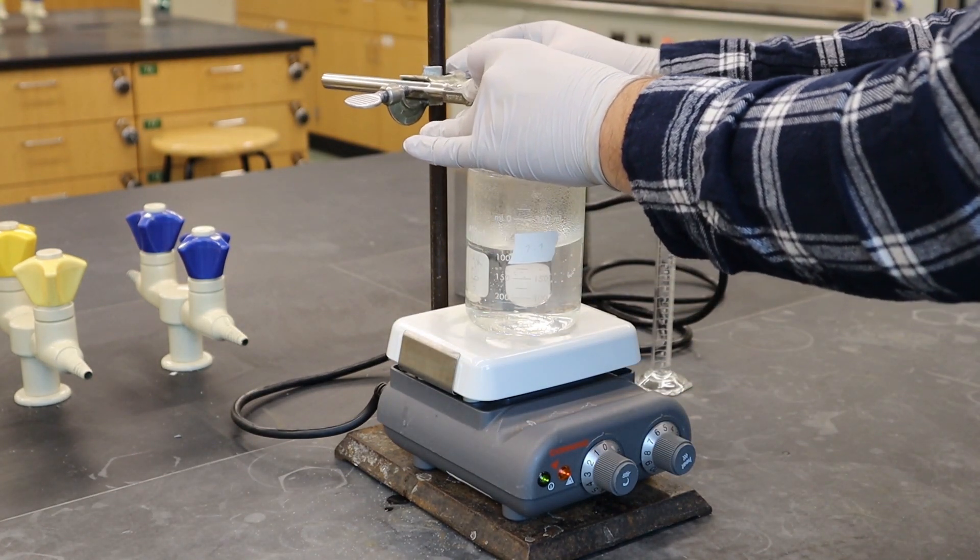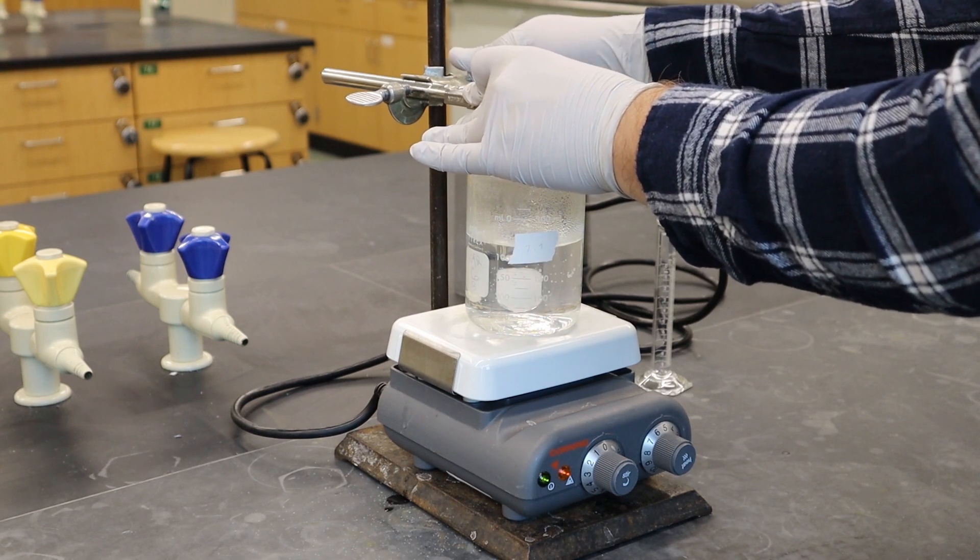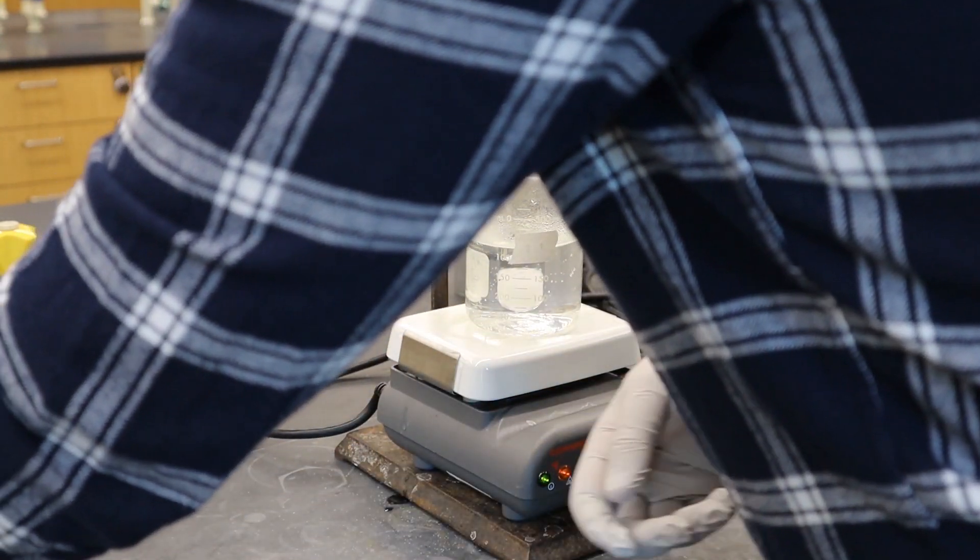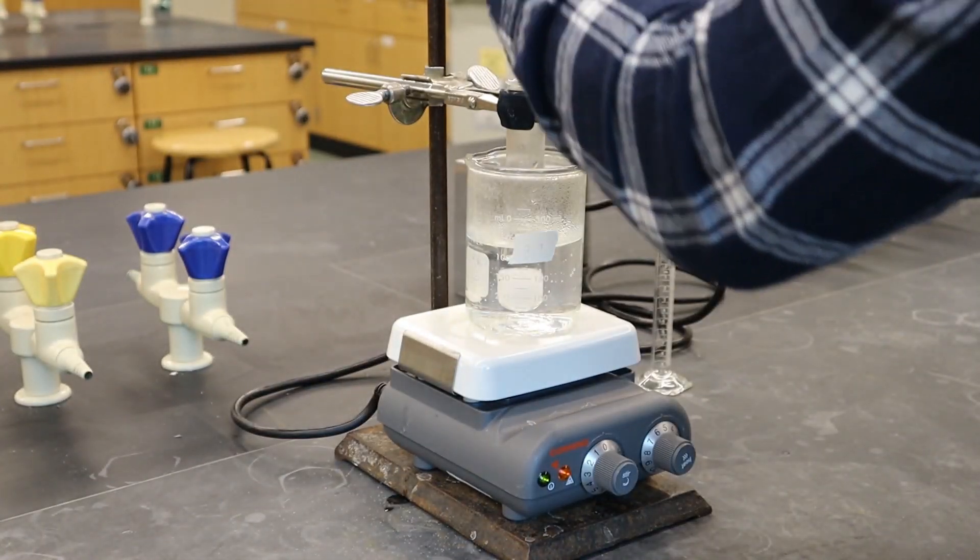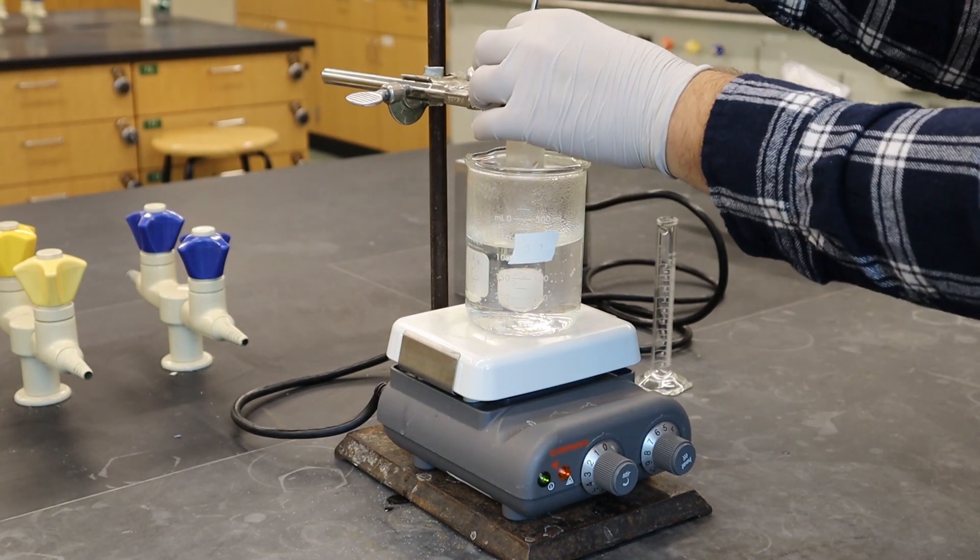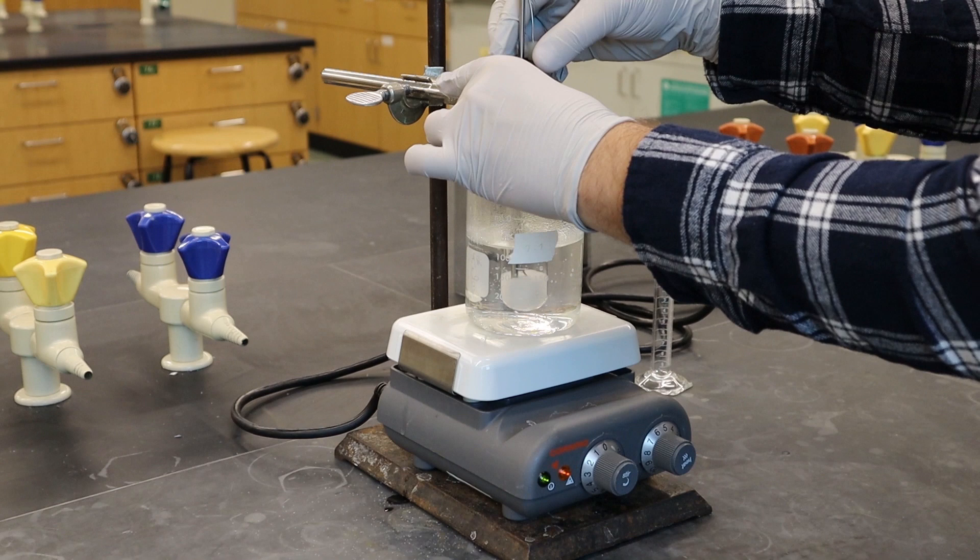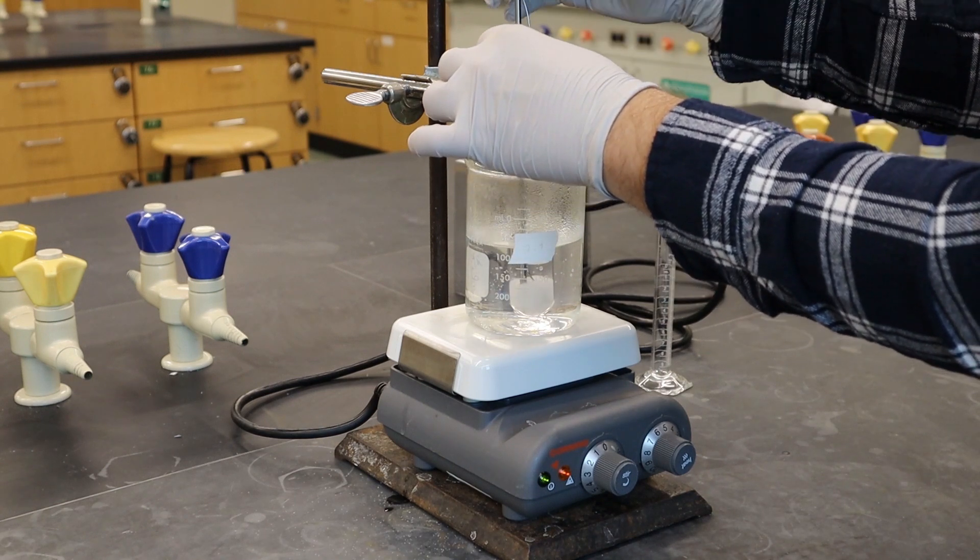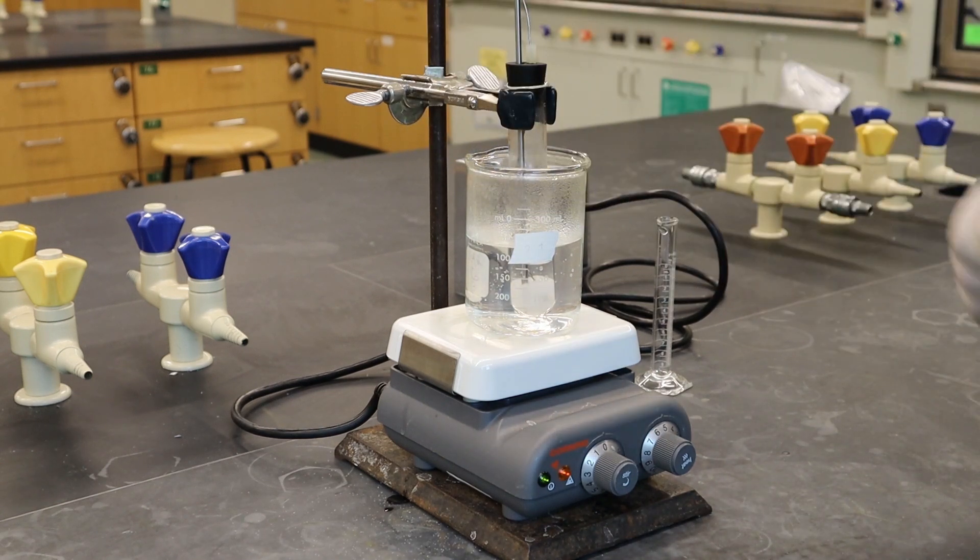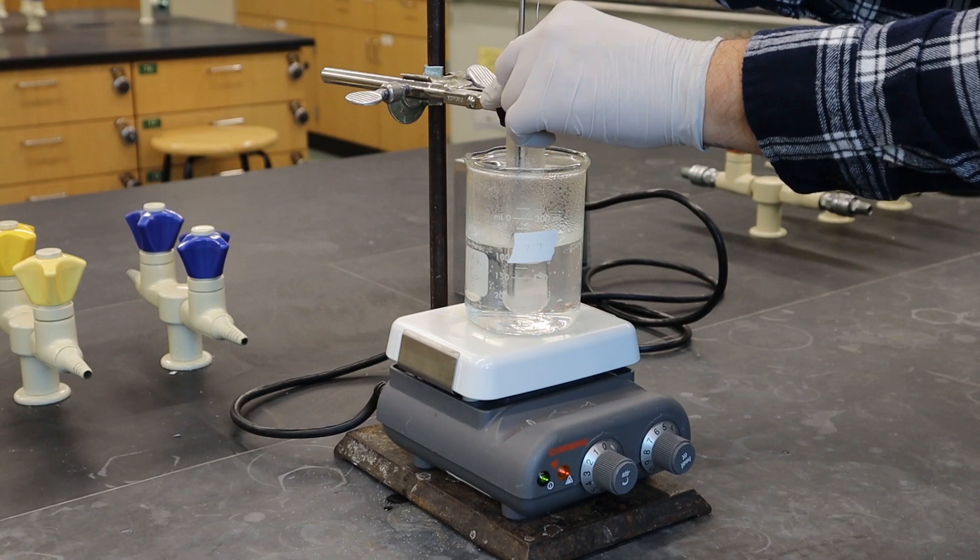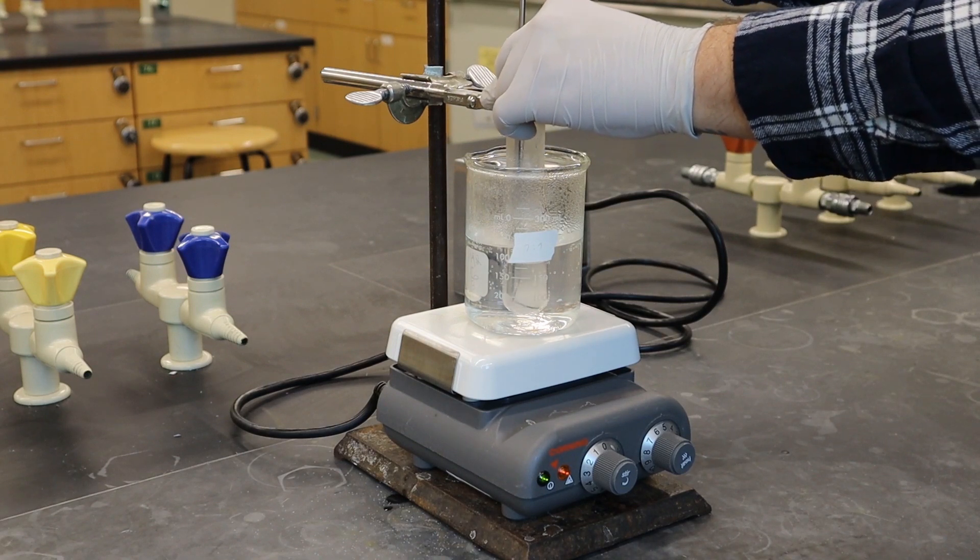So we're trying to measure the solubility product so we have to get it all dissolved and then we're gonna measure out when it stops dissolving. It's kind of the transition between the two. So this is gonna involve trying to be as accurate as we can about when it dissolves so it involves lots of stirring and temperature measurements.